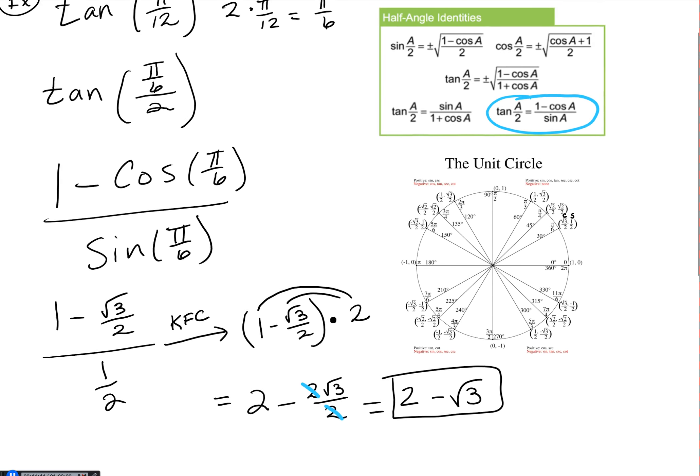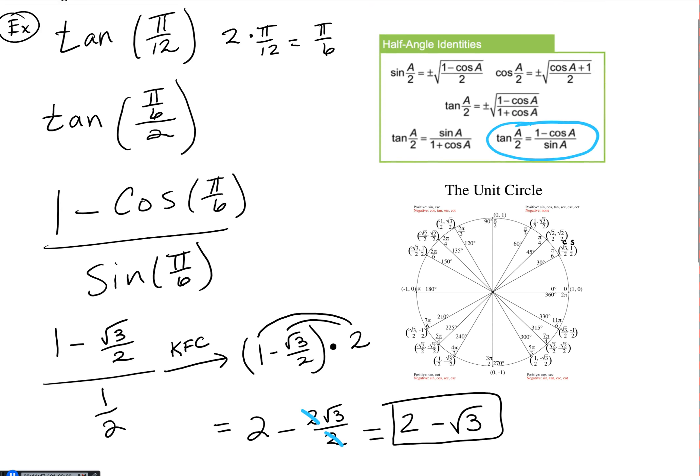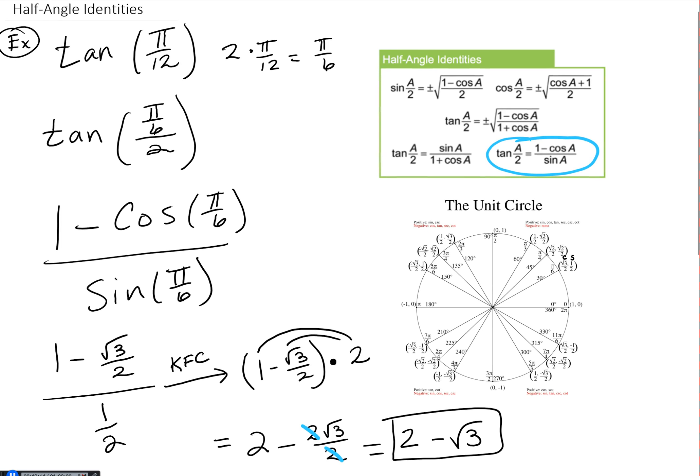So the tangent of π/12 equals 2 minus √3 — a really clean answer. The tangent half-angle identities work out nicely, especially when we avoid the square root form. So this has been a look at half-angle identities in trigonometry. They have a lot of applications, especially when you get to calculus. Good luck!